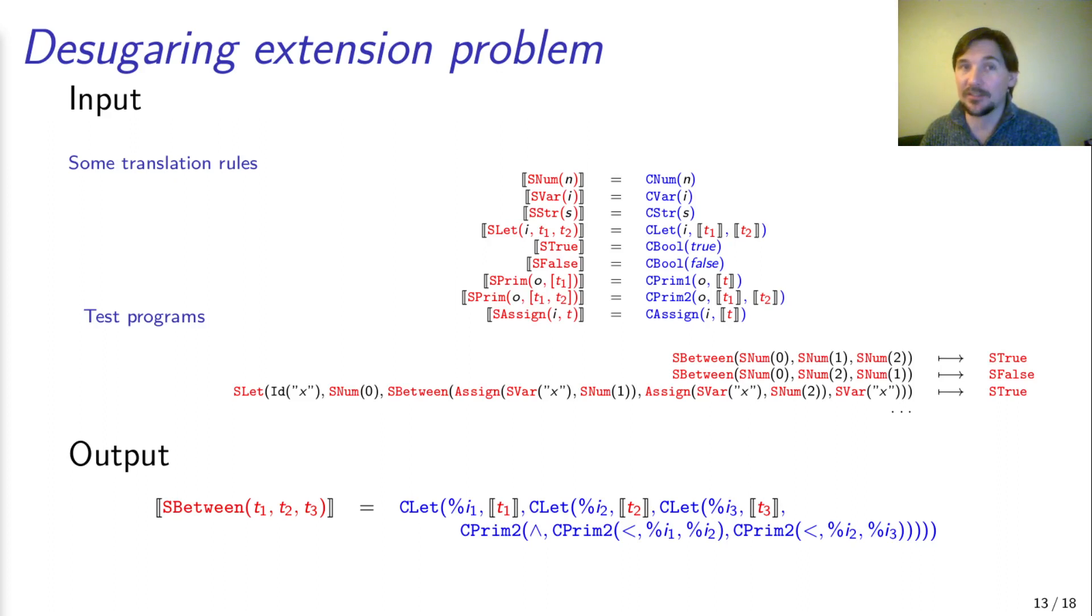We gradually extend the translation to the full source language by chaining together desugaring extension problems. We hypothesized that we can partition the learning task into individual desugaring extension problems that are small enough to be solved, and this way, we can obtain the full translation of the source language.